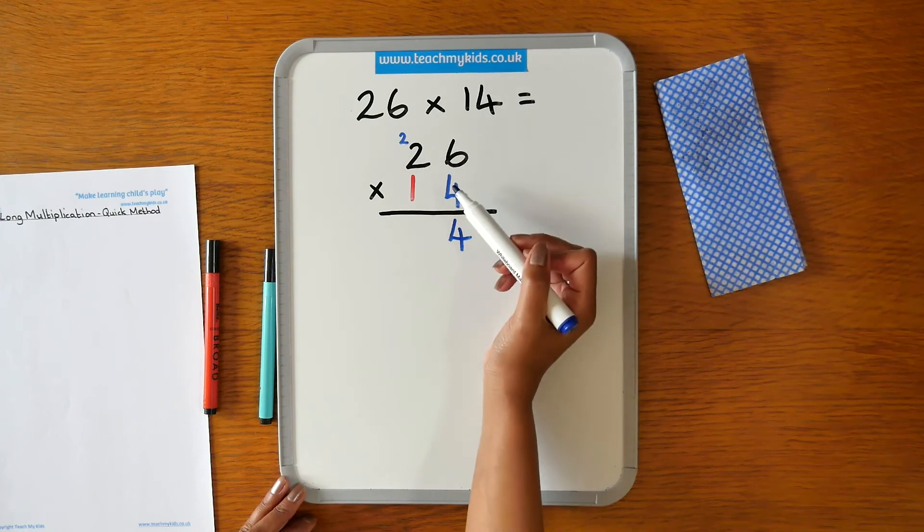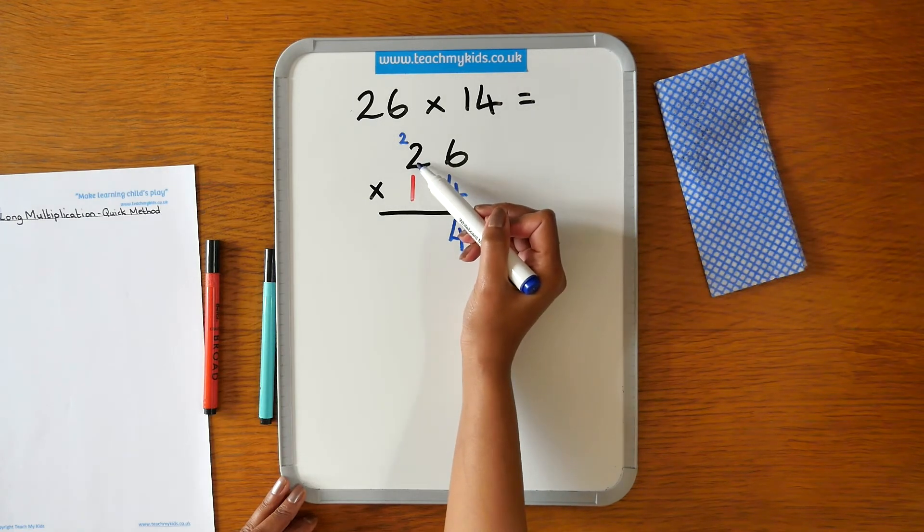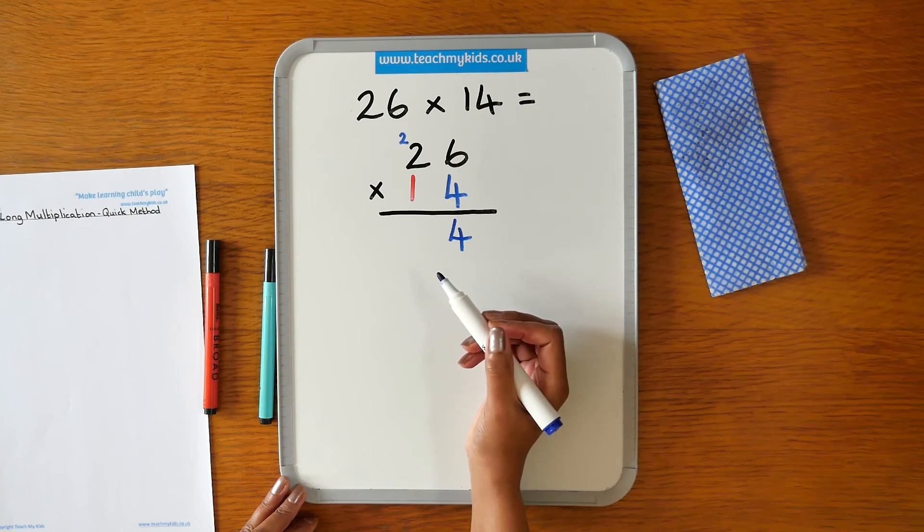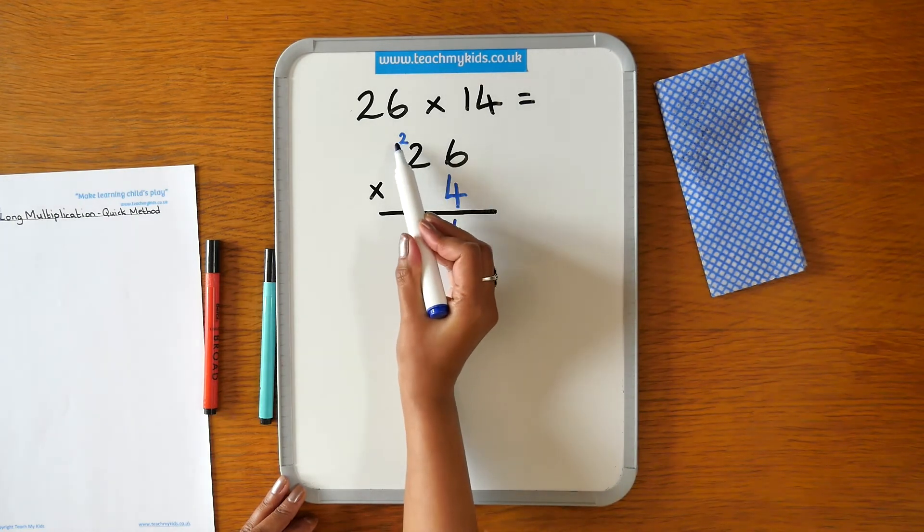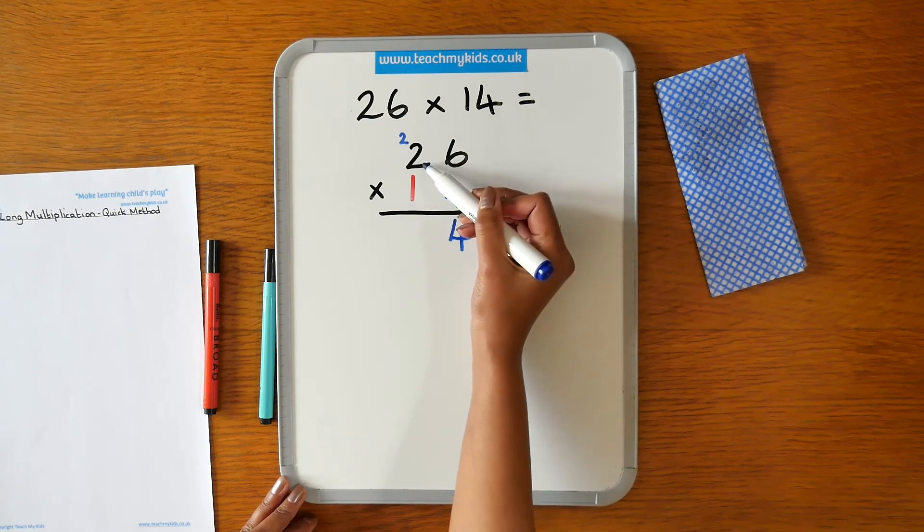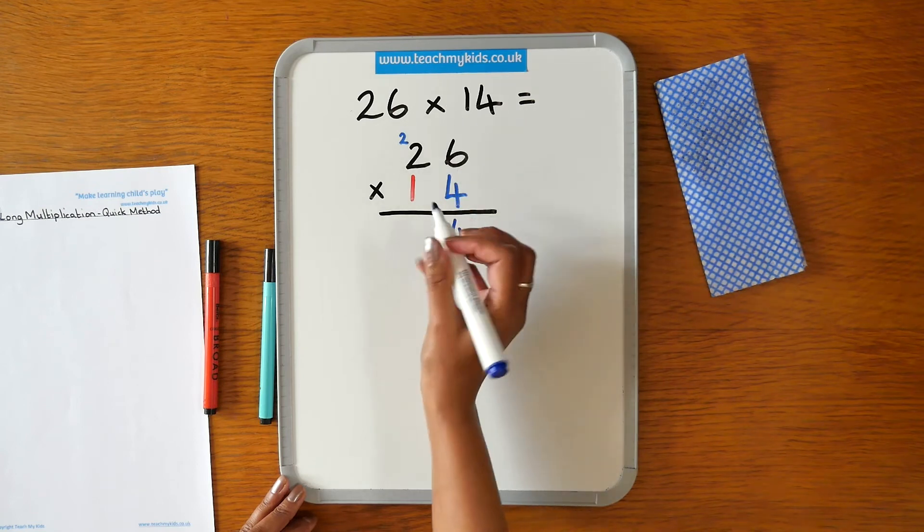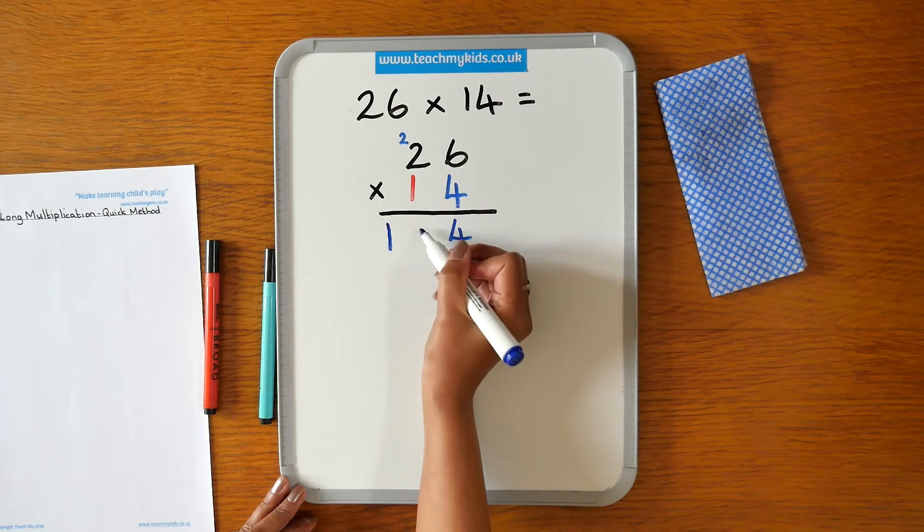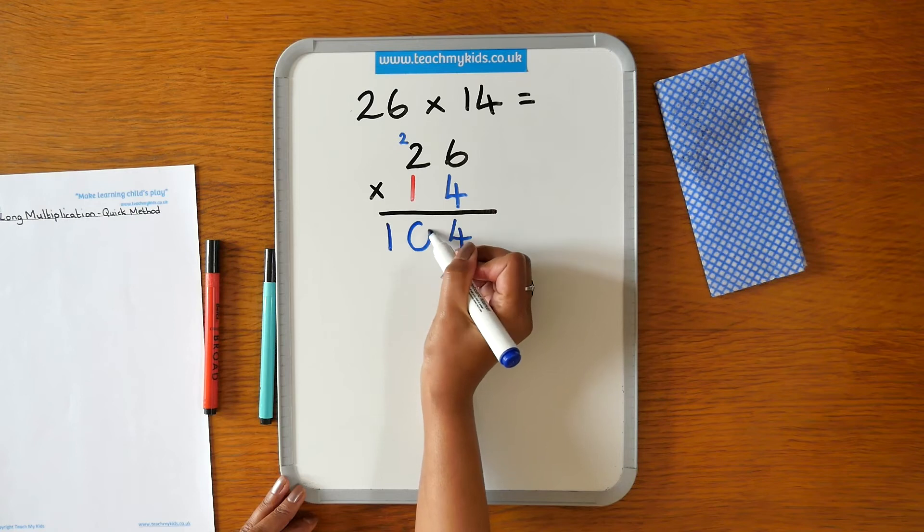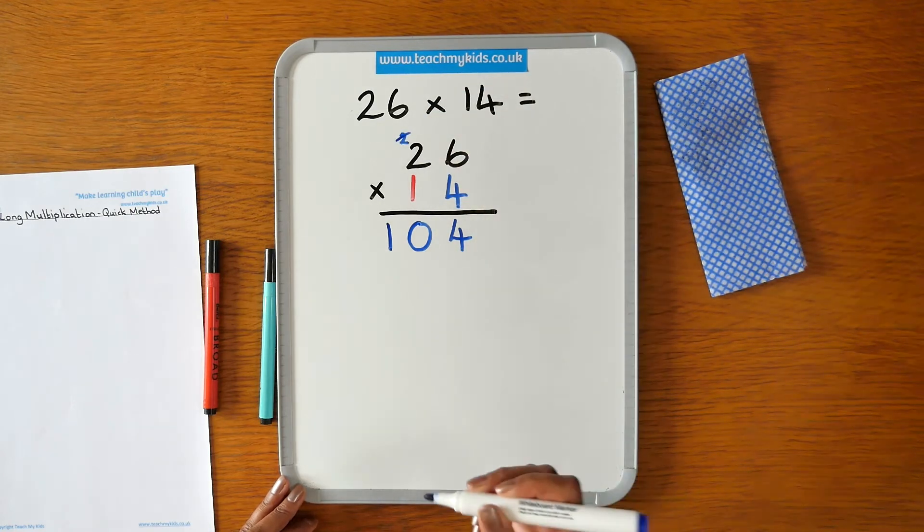The next number we need to multiply is 4 times 2. 4 times 2 is 8, plus 2 is 10. And we place the 10 underneath. I'm going to cross out the 2 to show that I've already used it.